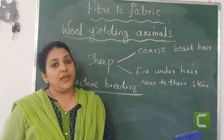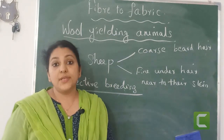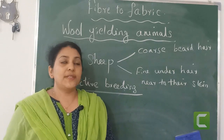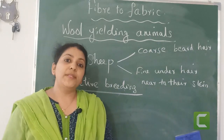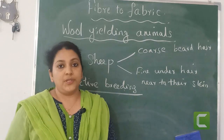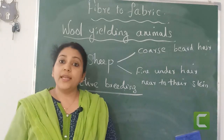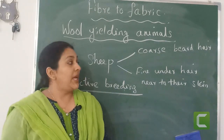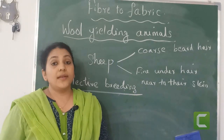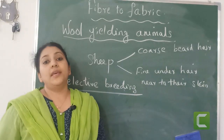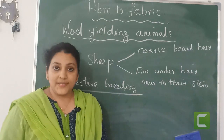Hope you understood what is selective breeding. Today I just started — in the coming classes, we will discuss more about the wool and processing of wool. After today's class, I just want to give you an activity: collect some pictures of wool-yielding animals and stick those pictures in your notebook. Today we discussed about selective breeding, examples of wool-yielding animals, and different types of hair. Today's class is over. In the next class, we will continue with the process of making the fur of an animal into wool. Have a nice day. Thank you.